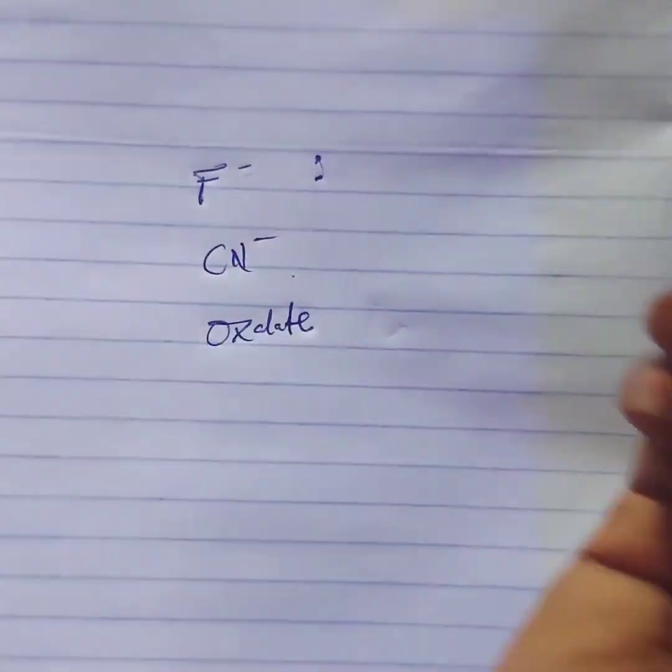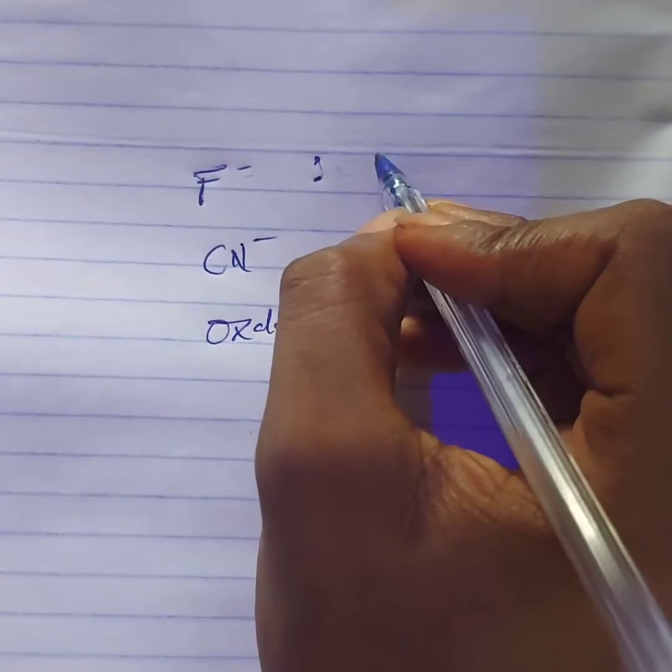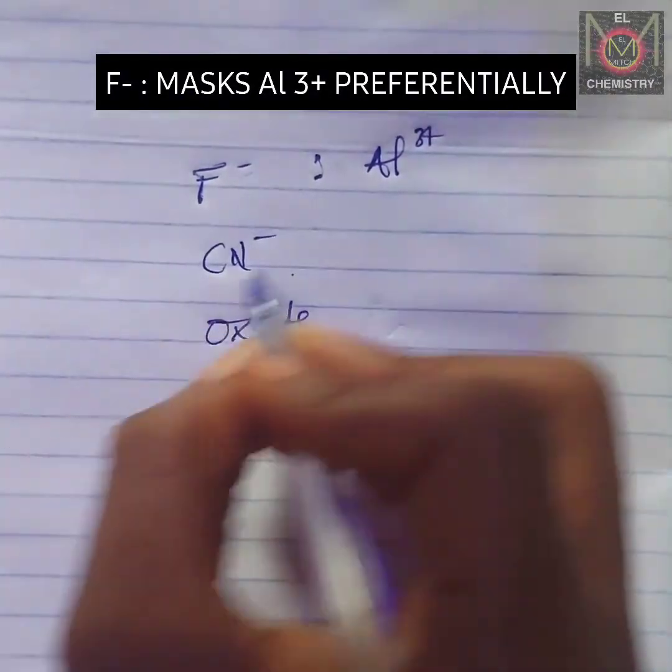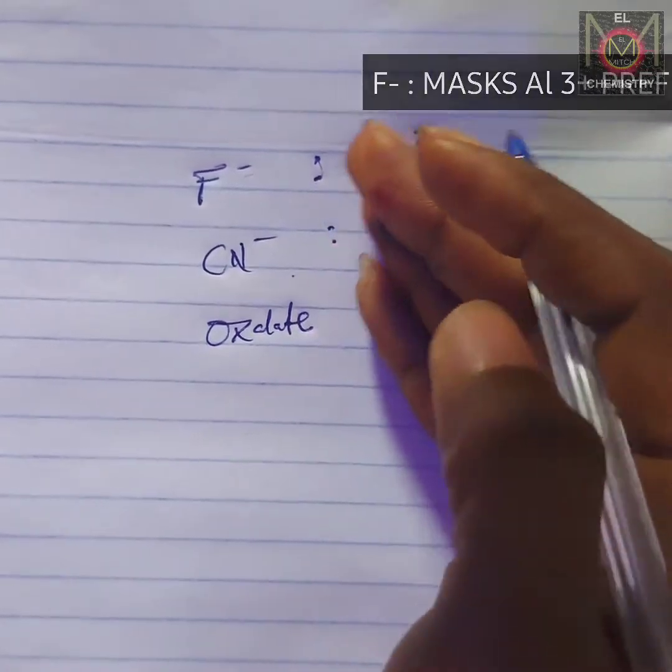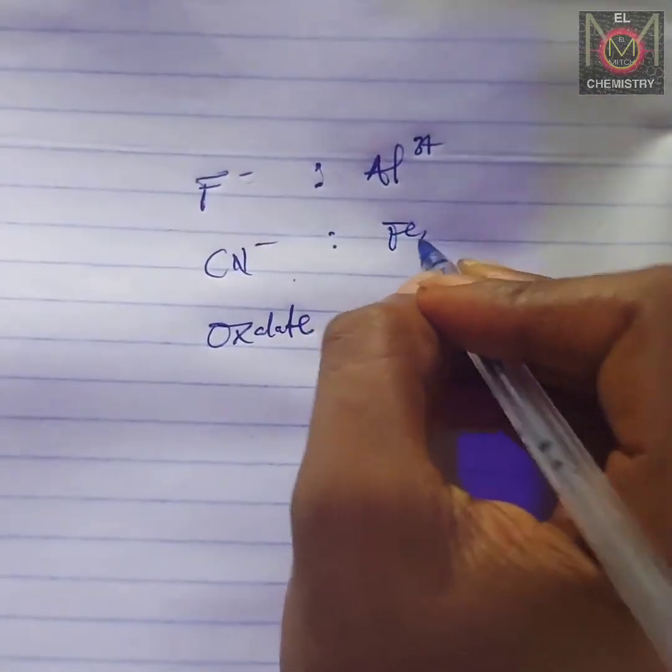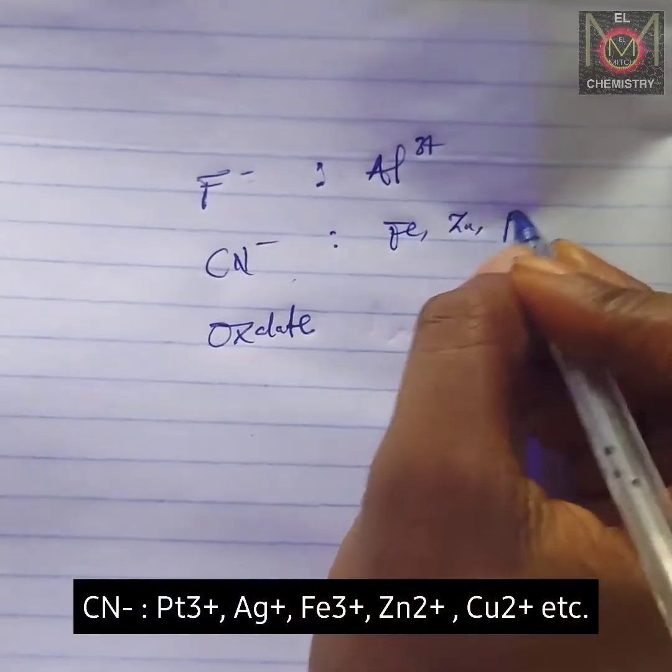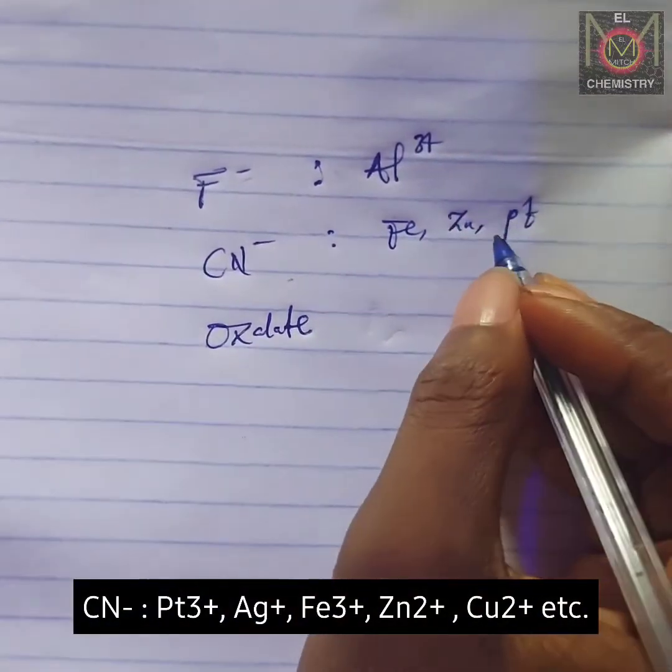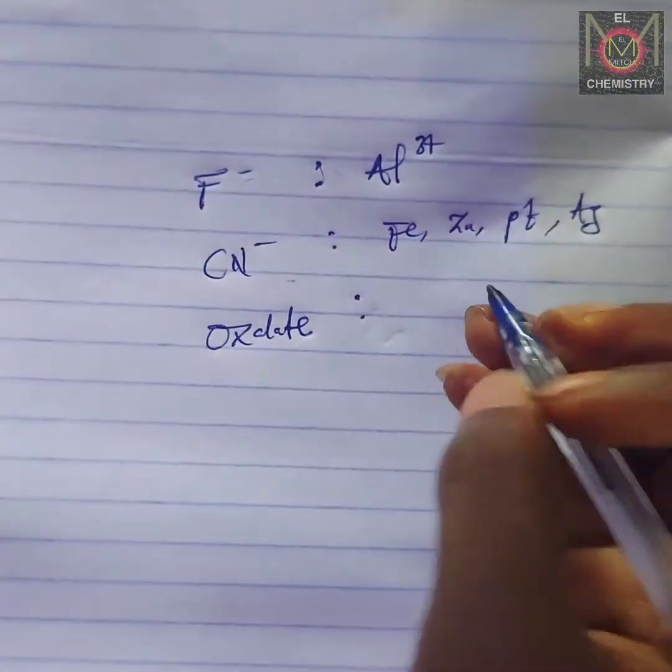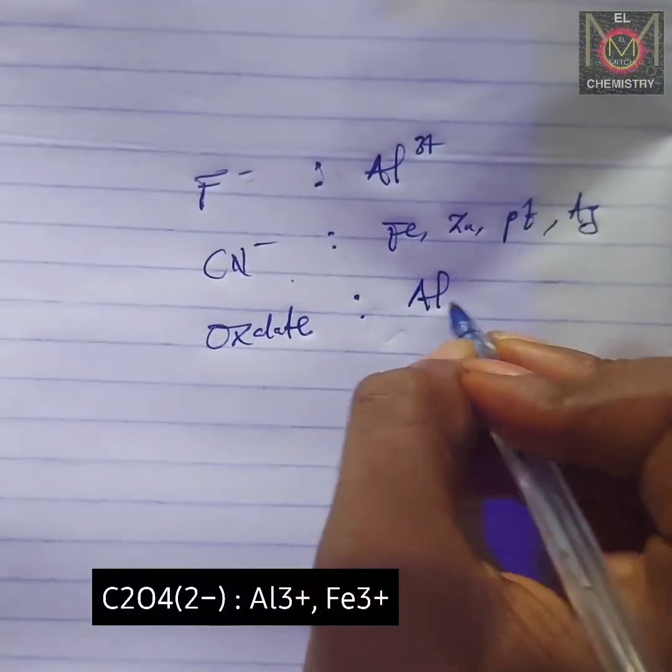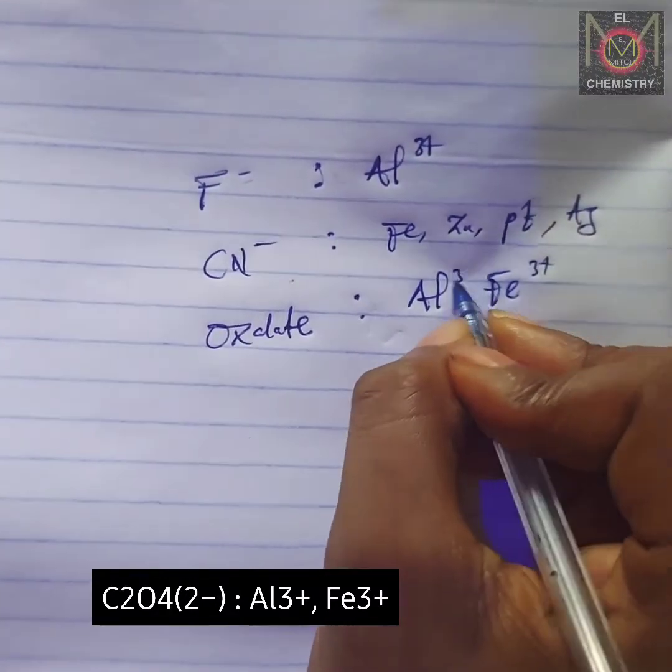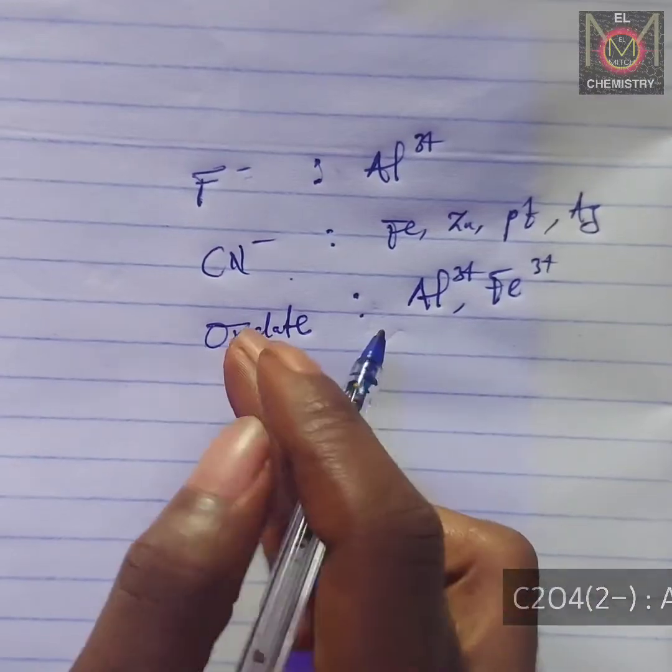We have masking agents such as fluoride, cyanide, and oxalate. Fluoride specifically is used for masking aluminum and iron. Cyanide is used for masking a number of ions such as iron, zinc, platinum, silver, and many others in their ionic forms. Oxalate is used for masking specifically aluminum and iron.